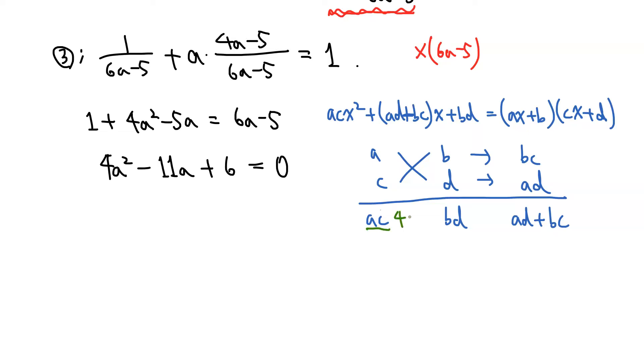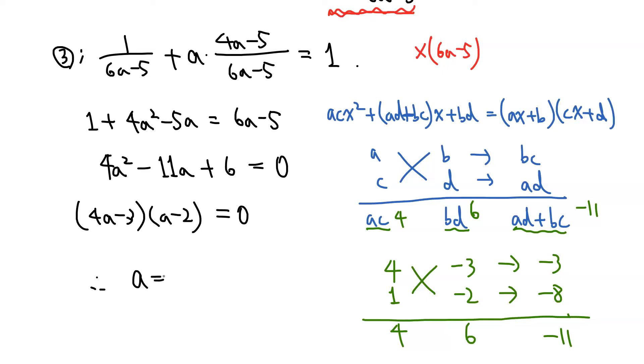So this must be 4, and this must be 6, and this must be minus 11. It may take some time to guess, but eventually we obtain this. So this gives minus 3, and this gives minus 8. So their sum is minus 11. This gives 4, and this gives 6. So we have 4A minus 3 times A minus 2 equals 0. So therefore, A equals 3 over 4, or 2.